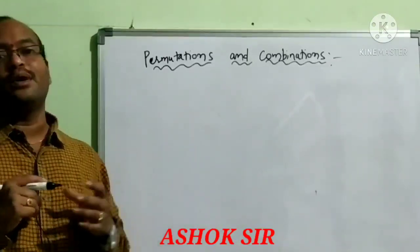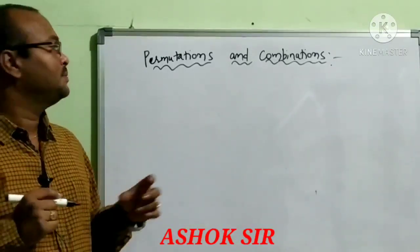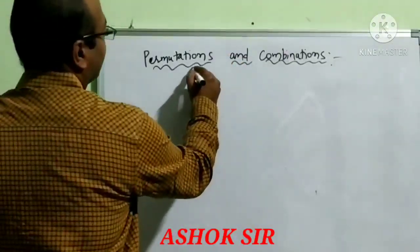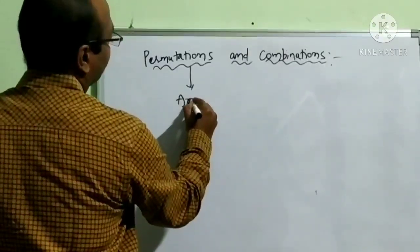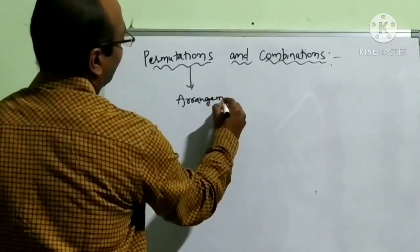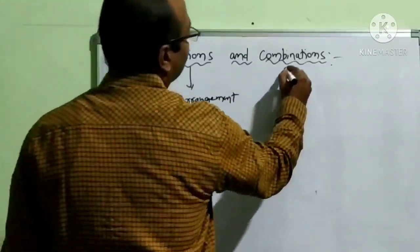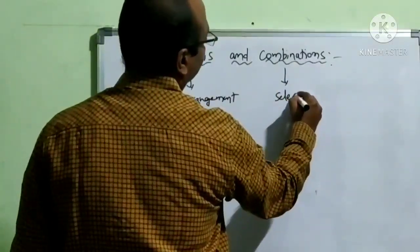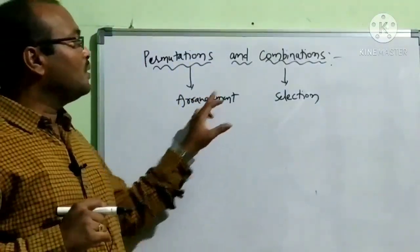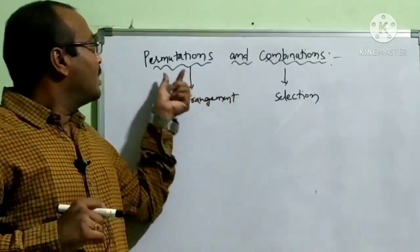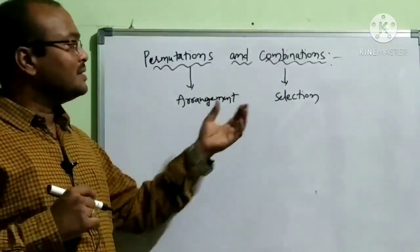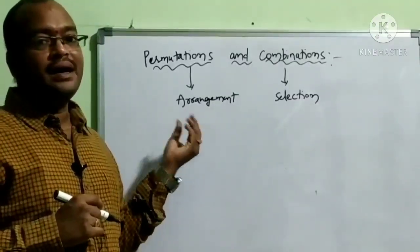Permutation is nothing but arrangement, and combination is nothing but selection. So permutation means arrangement. What is selection? What is arrangement?